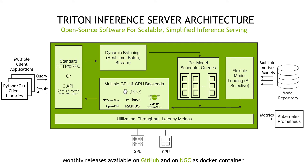Now let's dive underneath the hood to see how Triton works. On the very left you'll notice you can have multiple client applications sending requests to Triton at the same time. To make that process seamless, we provide Python and C++ client libraries that give APIs to make it easy to communicate with the server. There are two different paths for sending requests to Triton. The first is to use the standard HTTP REST or gRPC APIs. Alternatively, we also have a C API that allows you to directly integrate Triton into your client application as a shared library, eliminating the overhead from making an HTTP or gRPC call.